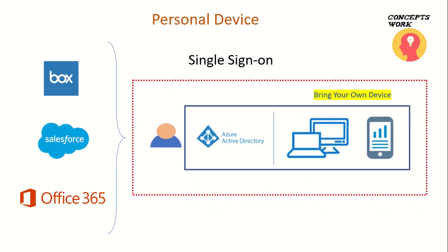When the device is registered in Azure Active Directory, a device object is created and a certificate is pushed to that particular device so that Azure Active Directory can trust it. All this happens when the user tries to register a particular device in Azure Active Directory.